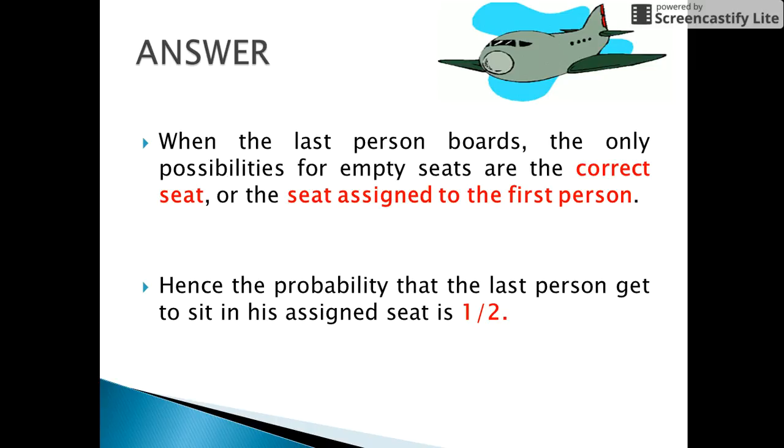Either the seat assigned to himself is free or the seat assigned to the 1st person is free, since he randomly chose to sit on a seat as he did not remember his seat number. So the probability is 1 by 2.